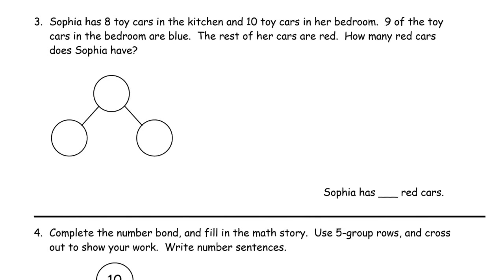Sophia has eight toy cars in the kitchen and 10 toy cars in her bedroom. So eight in the kitchen, 10 in the bedroom. Eight and 10 are parts, so 18 is our whole. These are Sophia's toy cars. S for Sophia.